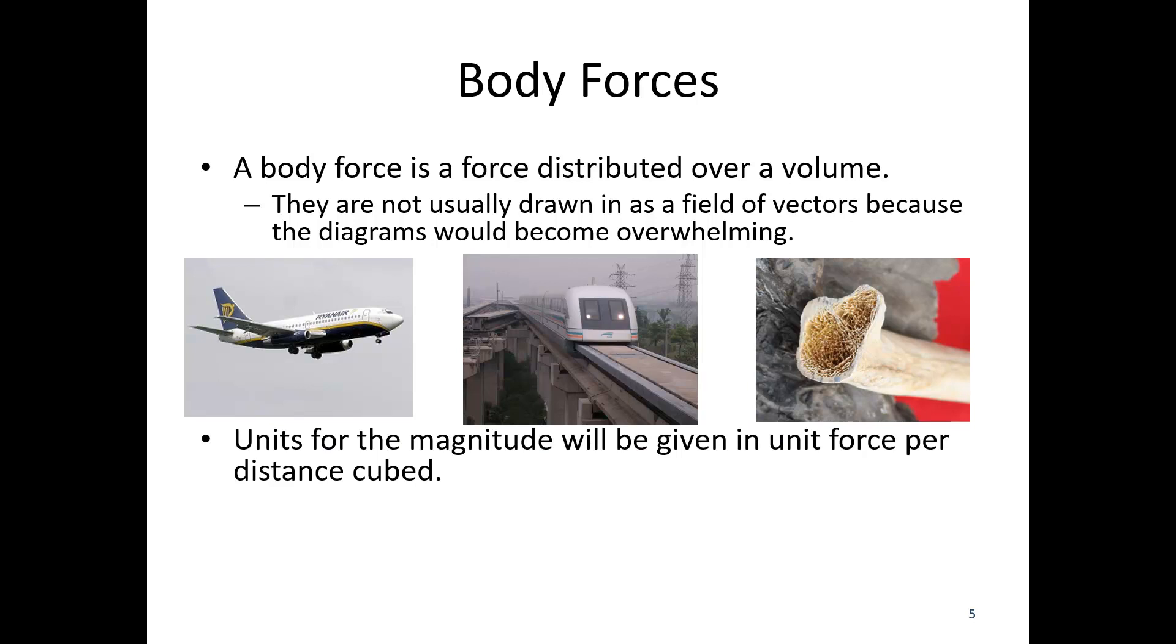The units for body forces are given as a unit force per distance cubed. So many pounds per cubic inch or so many newtons per cubic meter would be examples of units. The gravitational body force can be thought of as the weight due to object density. This is a force, not a mass per cubic volume, but the weight—so many pounds per cubic inch—similar to the concept of density in this case.